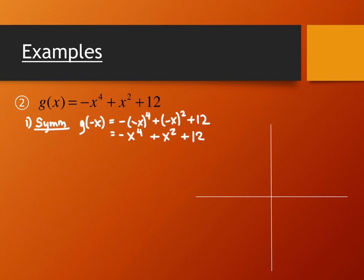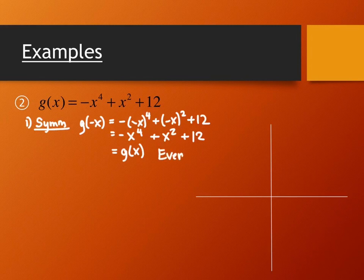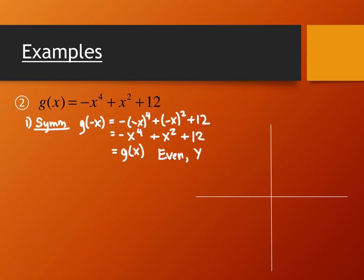So, comparing this back to the original g(x) function, what do you notice? It's the same. This is exactly the same as what the function started as. So, what does that tell you about the symmetry? It's even. Do you remember that? About the y-axis. That's exactly the next question. Good. So, this is even. Again, likewise, we can talk about it having y-axis symmetry.